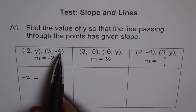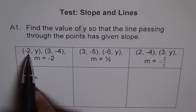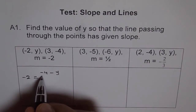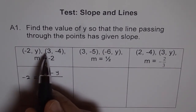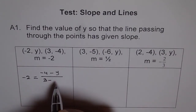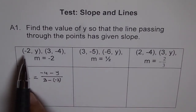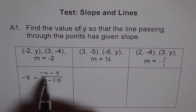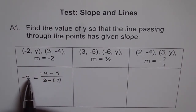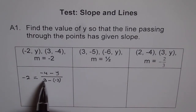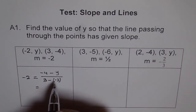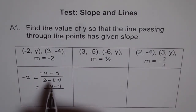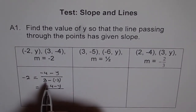Slope is Y2 minus Y1 divided by X2 minus X1. So Y2 here is minus 4. We say minus 4 minus Y — that value we need to find — divided by X2 minus X1, which is 3 minus of minus 2. Whenever we have another negative, we put it in brackets so there is no confusion. So we get minus 4 minus Y over 3 plus 2, because minus and minus becomes plus. So 3 plus 2 is 5.